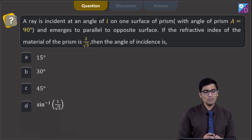There are 4 options: 15 degree, 30 degree, 45 degree, or sin inverse 1 by root 3.